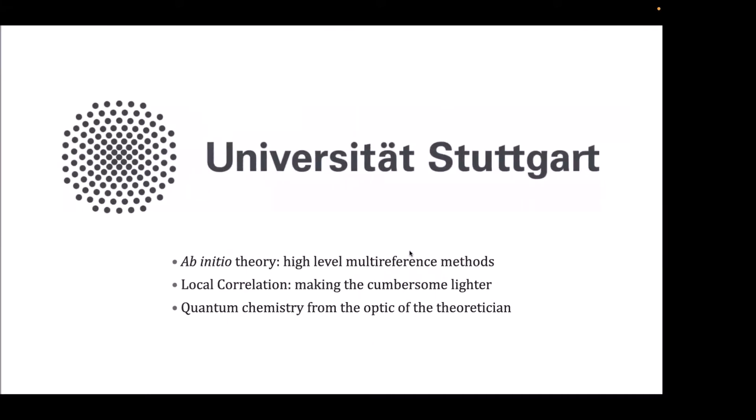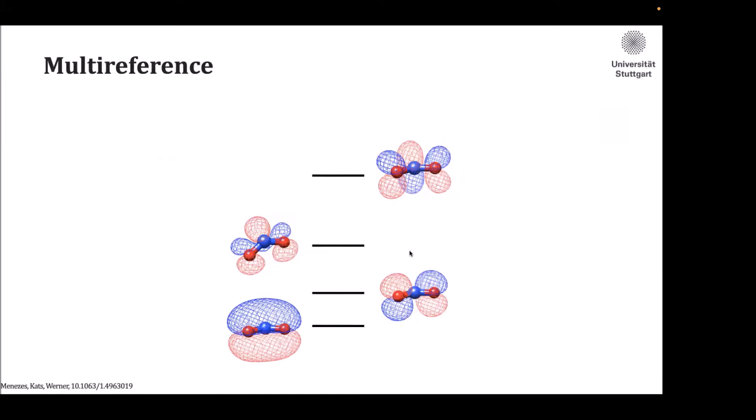With this background of experimental and computational methods, I moved to the University of Stuttgart to have a view on quantum chemistry from the perspective of the actual theoretician, not the applied theoretician. I used local correlation to reduce the computational cost of these methods. To understand what was done, I need to clarify two concepts.